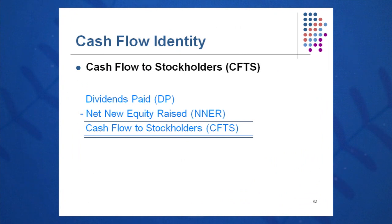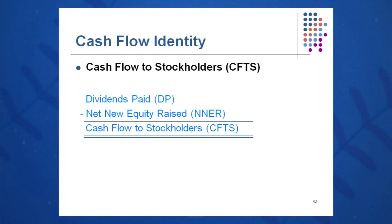The last term is cash flow to stockholders: dividends paid out in cash minus net new equity raised. Net new equity raised equals ending stockholders' equity minus beginning stockholders' equity. Notice that the cash flow from assets equation, formulated this way, looks a lot like the balance sheet — cash flow to creditors relates to liabilities, and cash flow to stockholders relates to equity. So if you remember the balance sheet equation, you can easily remember the cash flow from assets equation.